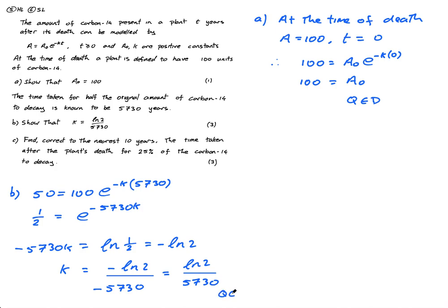Which is what they wanted me to show. So again, Q, E, D. Finally, part C. He says, find correct to the nearest 10 years the time taken after the plant's death for 25% of the carbon-14 to decay. Okay, be careful.